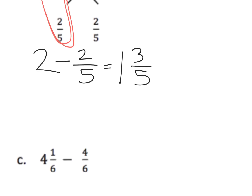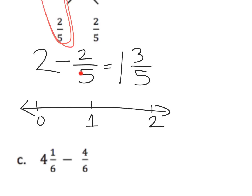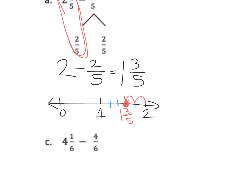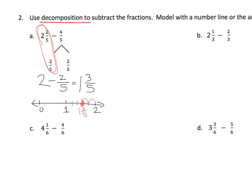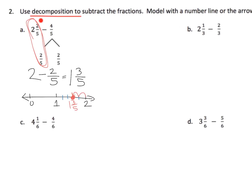Parents and teachers, you may need to show them on a number line. Here's zero, here's one, here's two. To go backwards two-fifths, you chop this into fifths and go backwards two-fifths. When I go backwards two-fifths, I end up at one and three-fifths. So essentially, we take this subtraction problem and turn it into two subtraction problems.